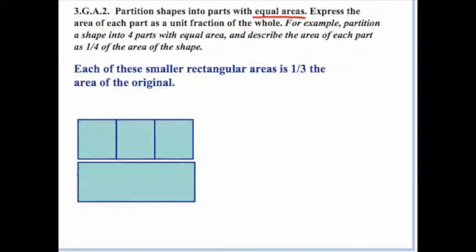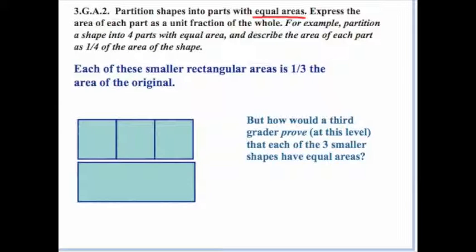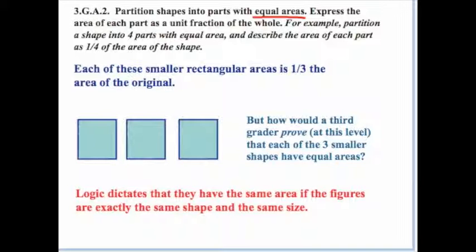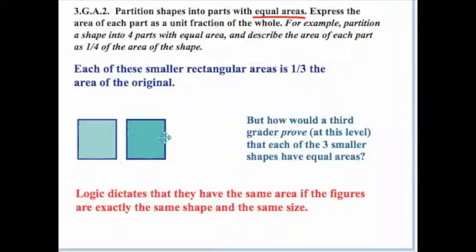Let's revisit the example where each smaller rectangular area is one-third the area of the original. How would a third grader prove that each of those three smaller shapes has equal area? Logic dictates they have the same area if the figures are exactly the same shape and size. All students need to do to prove this informally is to take one of the smaller rectangles and slide it over — it fits exactly over another one, proving they are carbon copies with the same area.